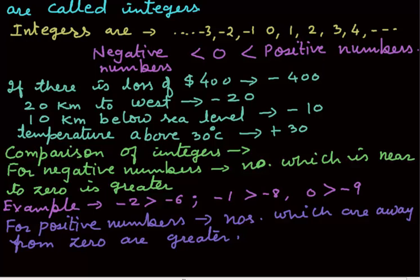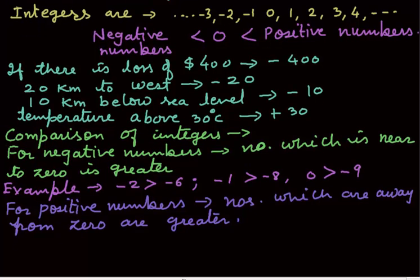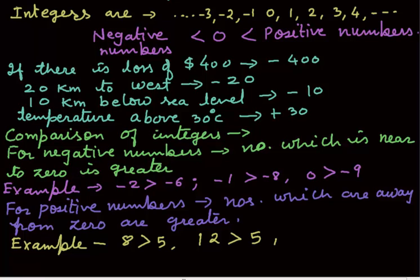For example, 8 is greater than 5, 12 is greater than 5, 20 is greater than 2, and so on.